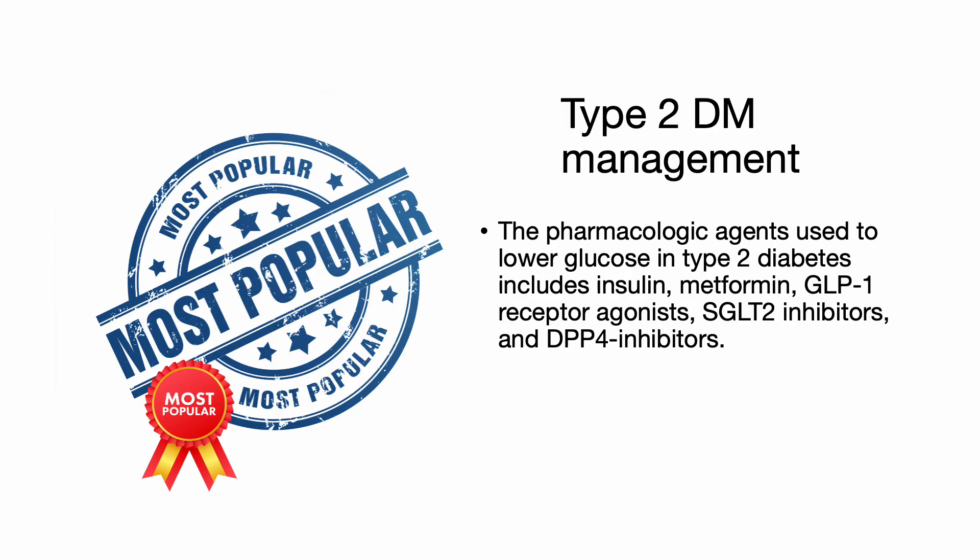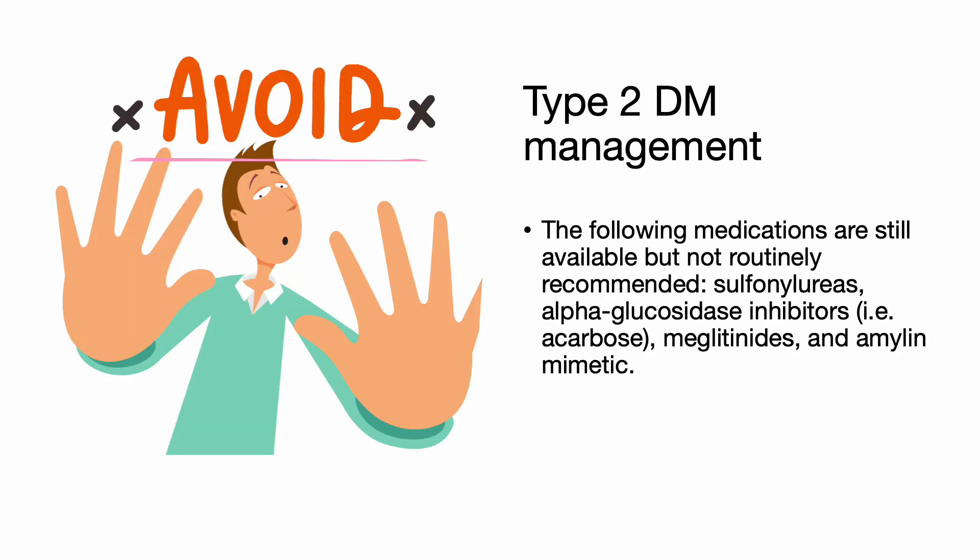The pharmacologic agents used to lower glucose in type 2 diabetes include insulin, metformin, GLP-1 receptor agonists, SGLT2 inhibitors, and DPP-4 inhibitors. The following medications are still available for type 2 diabetes but are not routinely recommended: sulfonylureas, alpha-glucosidase inhibitors like acarbose, meglitinides, and amylin mimetics.